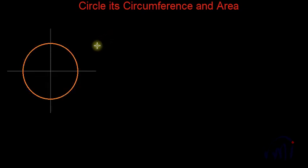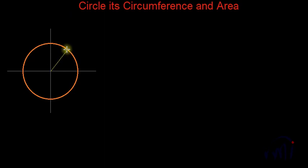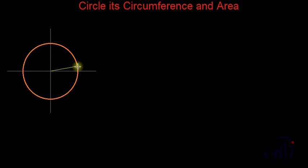Suppose if I draw a circle, it will look something like this, where this point is known as the center of the circle. This is the point from where if I try to measure the distance to the boundary of the circle, all these distances will be equal.